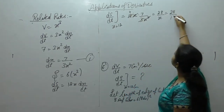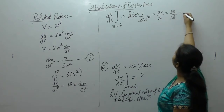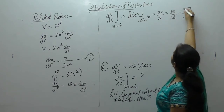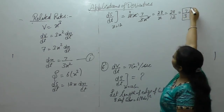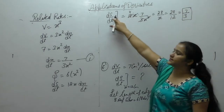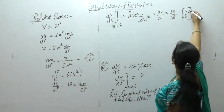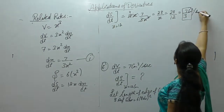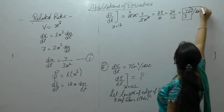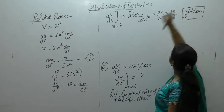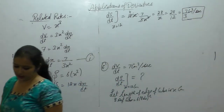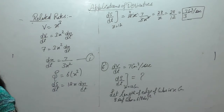Now put x equal to 12, we get 7 by 3. Surface area will be in centimeter square and time is in second. So 7 by 3 centimeter square per second.